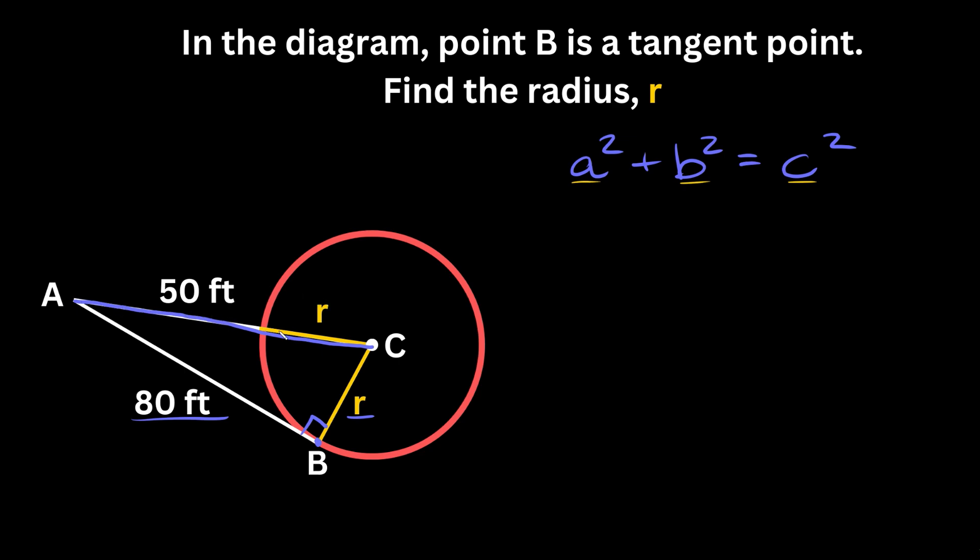How do we know this is the hypotenuse? Remember, in a right triangle the hypotenuse is always on the opposite side of the right angle. So if the angle is over here, the opposite side is this one over here.